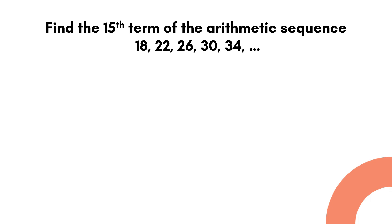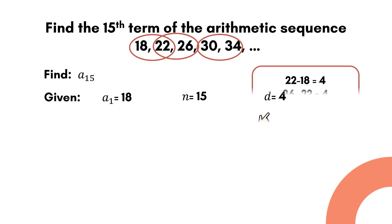In this example, we are going to find the 15th term, or a sub 15. The given in this example are: the first term is equal to 18, n will be 15 because we're looking for the 15th term, and the common difference is 4. To get the common difference, we just have to subtract any consecutive terms of the given sequence.